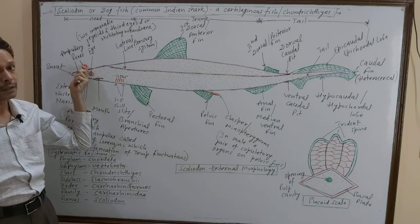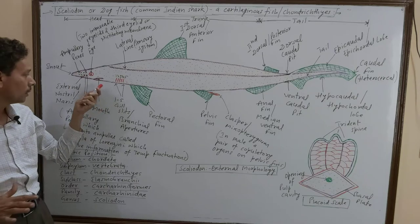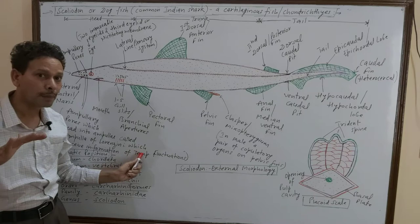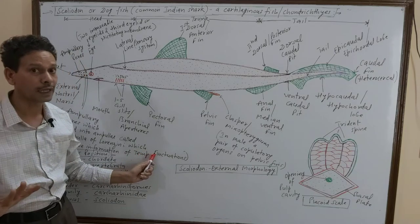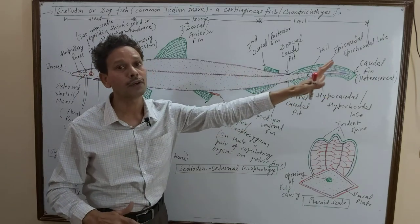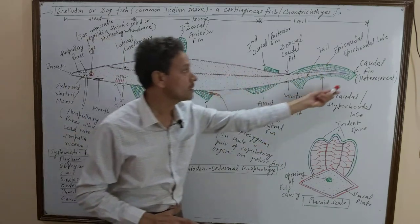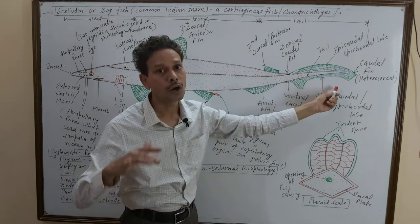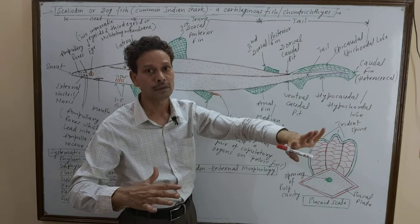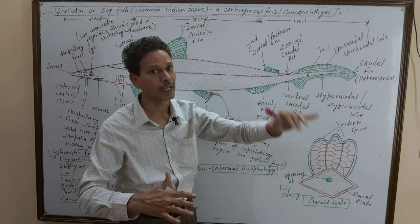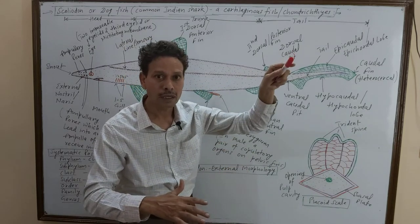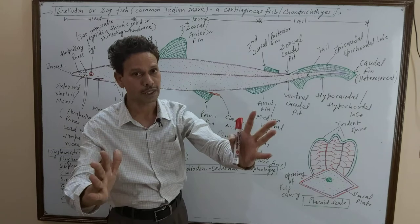Ampullary pores are there on the head region; they lead to the ampulla of Lorenzini, which detects temperature fluctuations. On the body, you can see the lateral line sense organs. On the tail region, the caudal fin is asymmetrical — heterocercal. But in case of Labeo, the bony fish, the caudal fin is symmetrical — homocercal.